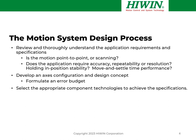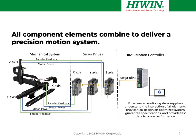Understanding application requirements is the key. We want to identify what is the most important specification and focus there. Once we know that, we consider the best axes configuration to meet the objectives, and from there determine an error budget — how much error contribution is allowed from each axis. When we talk about a motion system in this webinar, we're really referring to a complete positioning system consisting of a mechanical or mechatronic system with structural mechanics plus drive elements and feedback elements, servo drives which are the electronics that power the system, and ultimately a motion controller that coordinates the motion of the various servo drives.